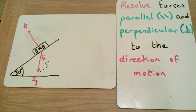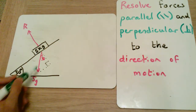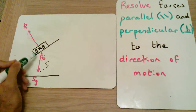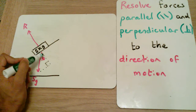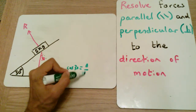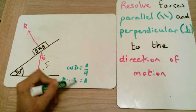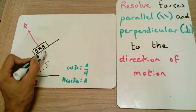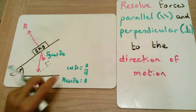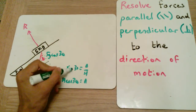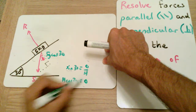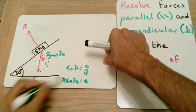We now resolve this force into its parallel and perpendicular components using basic trigonometry (SOHCAHTOA). The adjacent side of the triangle is the perpendicular component: cos 30 = adjacent over hypotenuse, so the perpendicular component is 5g cos 30. Similarly, the opposite side is the parallel component: sin 30 = opposite over hypotenuse, so the parallel component is 5g sin 30.